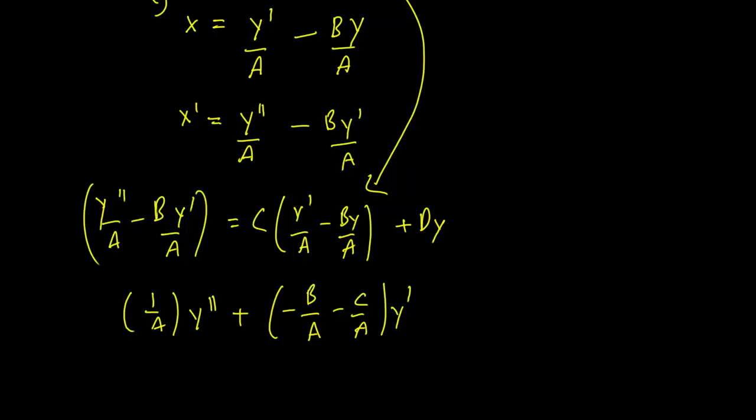minus c over a times y' plus bc over a, sorry, minus d times y equals 0.